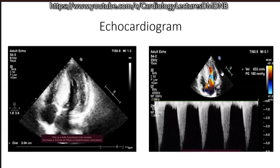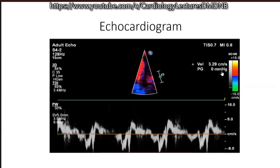Amyl nitrite is not available currently. Regarding mitral regurgitation: the patient did have moderate MR, but the X-ray was good enough to show that there was MR. How often do you get MR on echo in patients with HOCM?